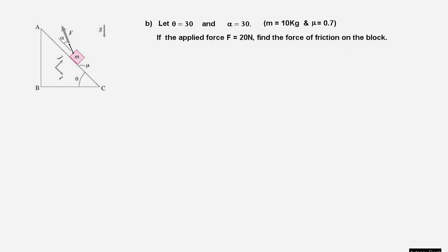Compared to the previous problem, there are some changes in Part B. The angle of inclination of the plane is now 30 degrees, the force also makes an angle of 30 degrees with the plane, and the magnitude of the applied force is given as 20 newtons. We are supposed to find the force of friction. There is a major difference: unlike Part A, nothing has been specified about whether the block is in equilibrium, sliding up, or sliding down.